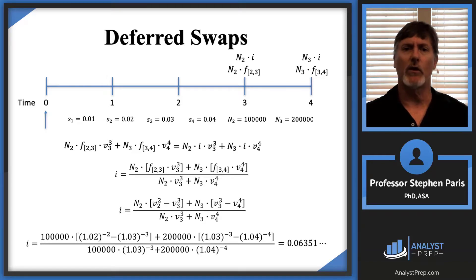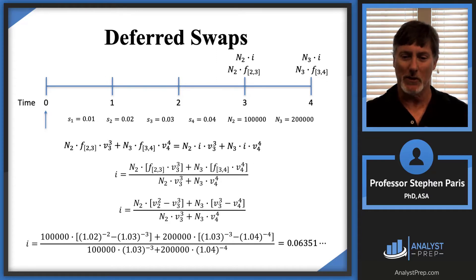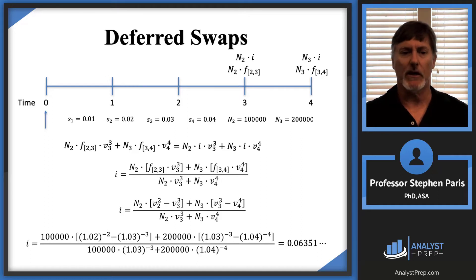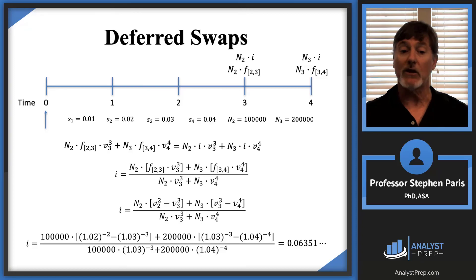Plugging in the numeric values gives a swap rate of 6.351%. That completes all the numeric-type problems for the course — congratulations! There's one more video covering key interest rates and some true/false-type question topics, but numerically we're done with the types of problems you'll see on the FM exam. See you in the next video.